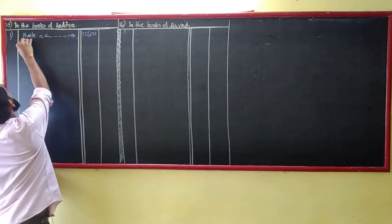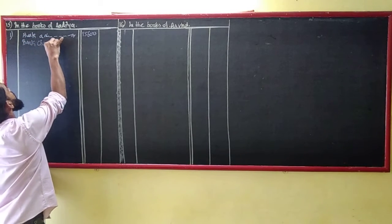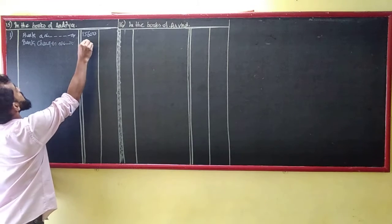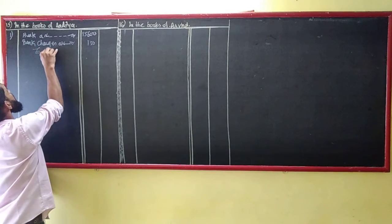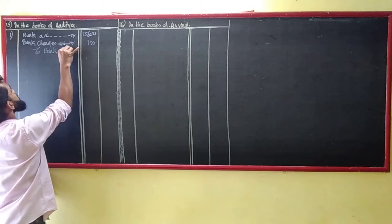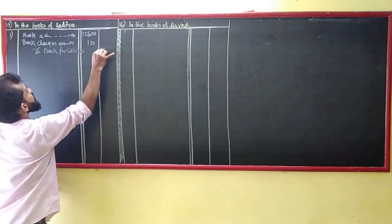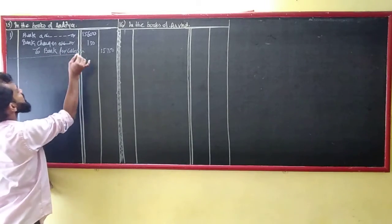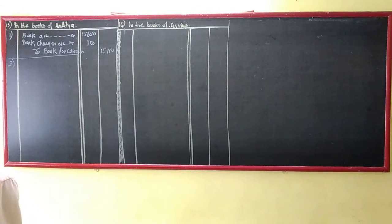Unless and until you are not firm with the entries, check the entries. To bank for collection account, how much? 15,750. Bills receivable account 15,750. That transaction number two, being bill dishonored.